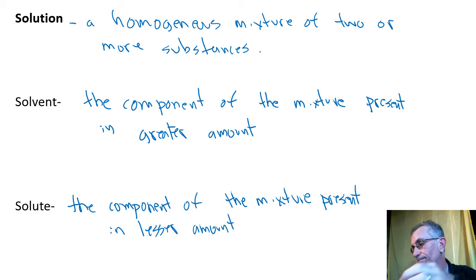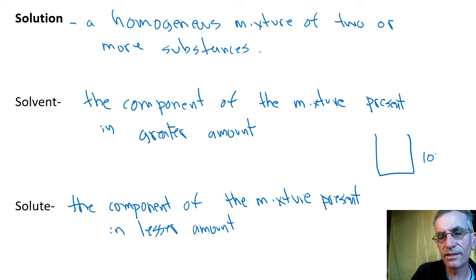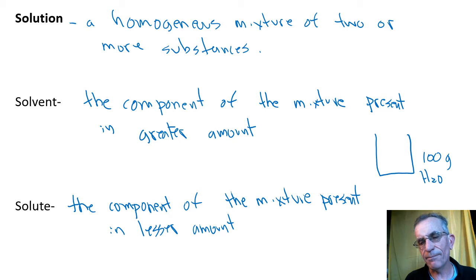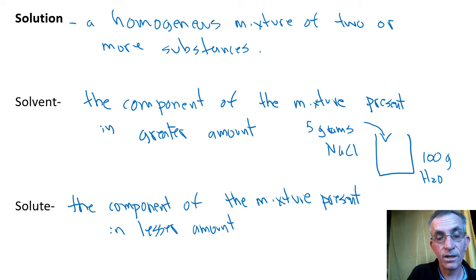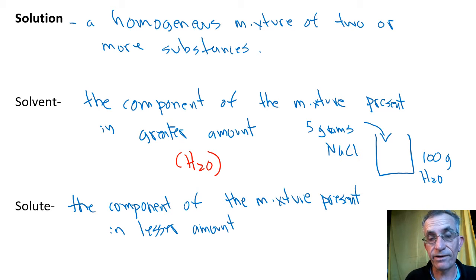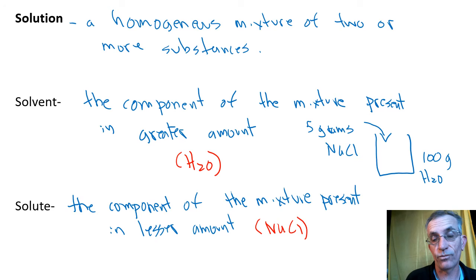So is it really a solution? You stir it, there shouldn't be layers — it should be the same all the way through, that's homogeneous — and it's two things put together, so yes, this is a solution. Looking at solvent and solute: I used maybe 100 grams of water and only about 5 grams of salt. The thing we have most of — the water — is the solvent, and the salt, the thing we have less of, is the solute.